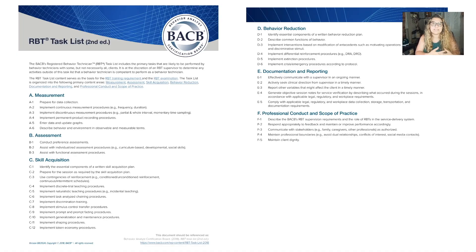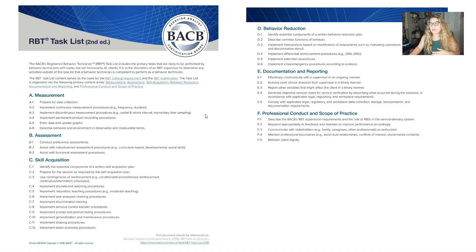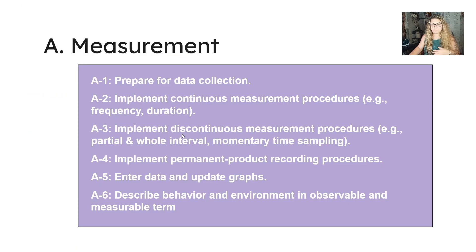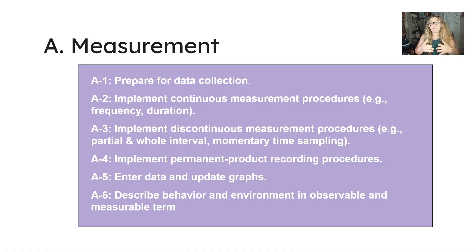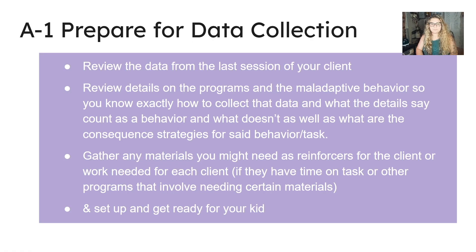The first thing you see here is the actual RBT task list. This is something you should be going over and over until you're very fluent and could do it in your sleep. We're going to be touching on measurement Section A right here. Measurement has six segments: A-1 is prepare for data collection, A-2 is implement continuous measurement procedures, A-3 is implement discontinuous measurement procedures, A-4 is implement permanent product recording procedures, A-5 is enter data to update graphs, and A-6 is describe behavior in observable and measurable terms.